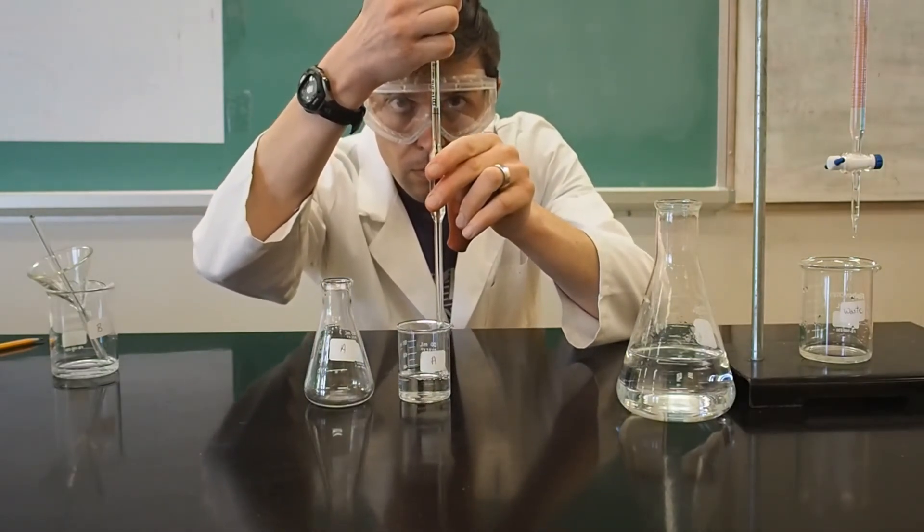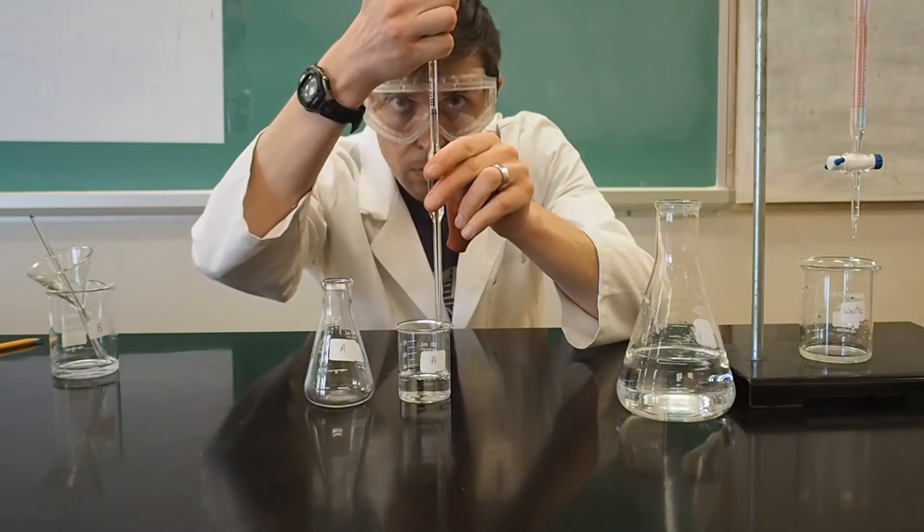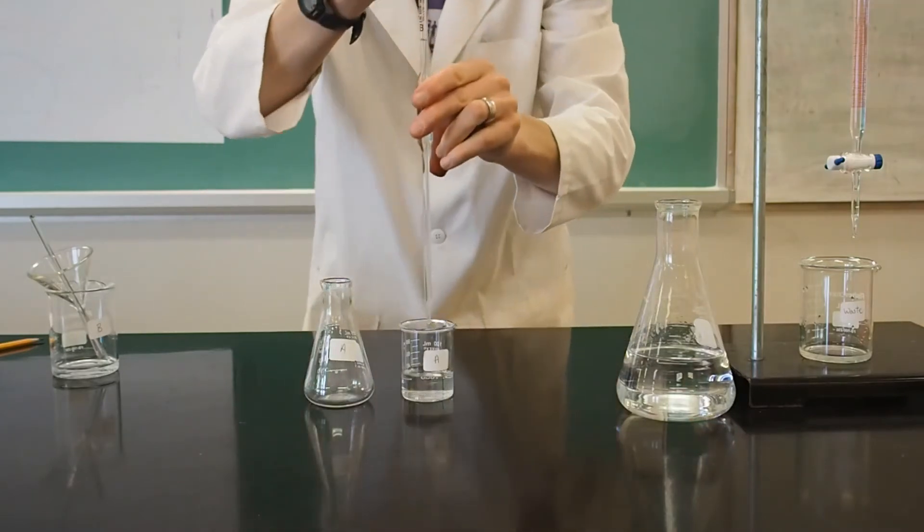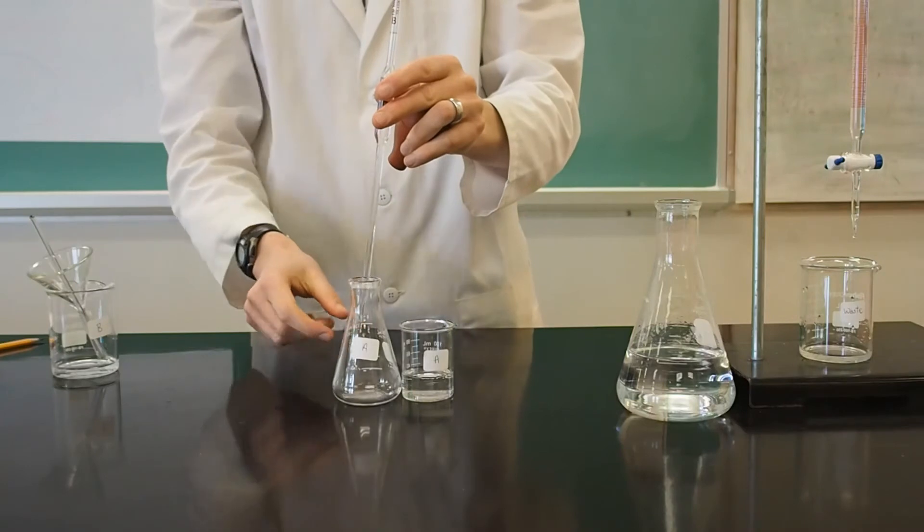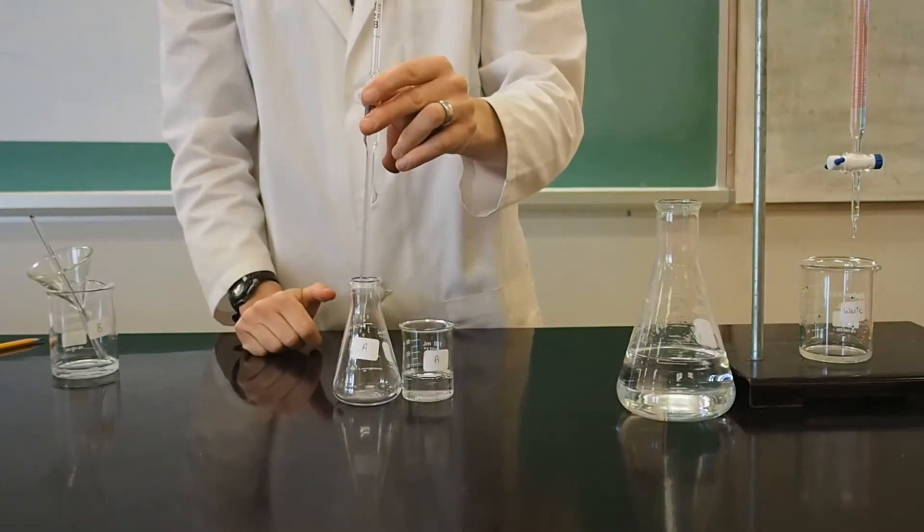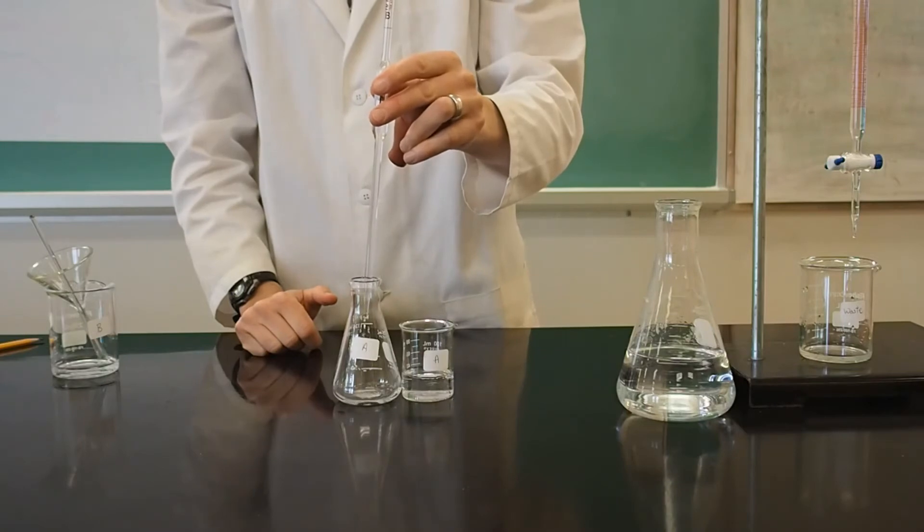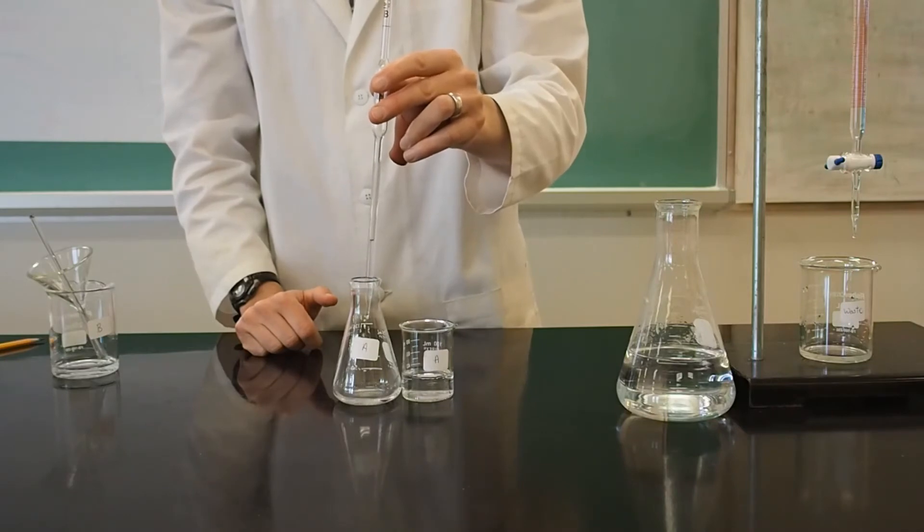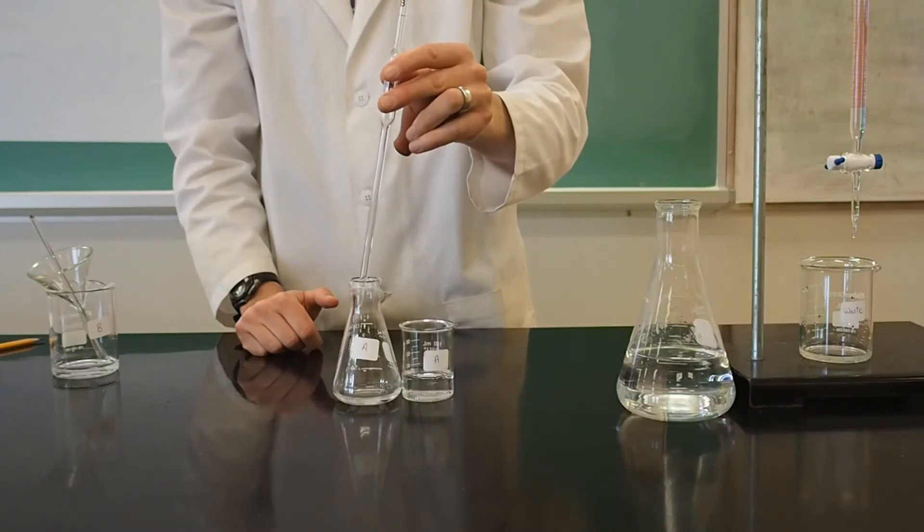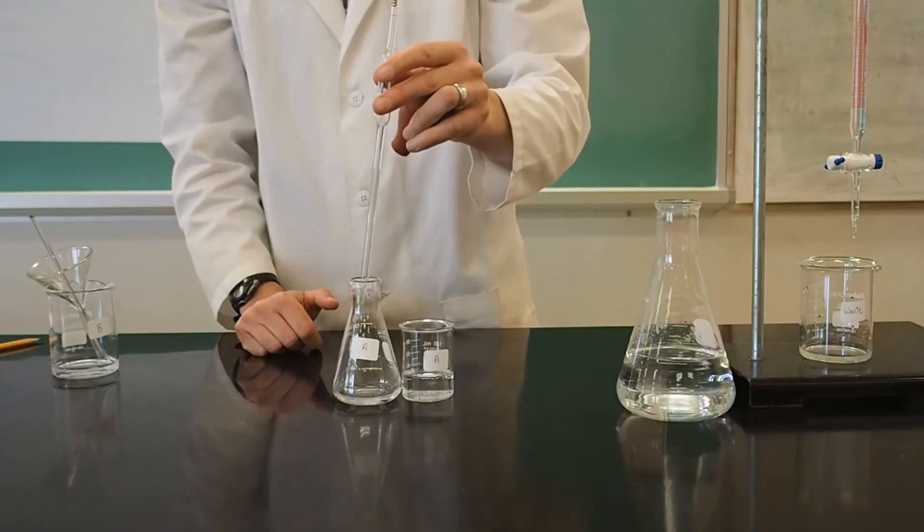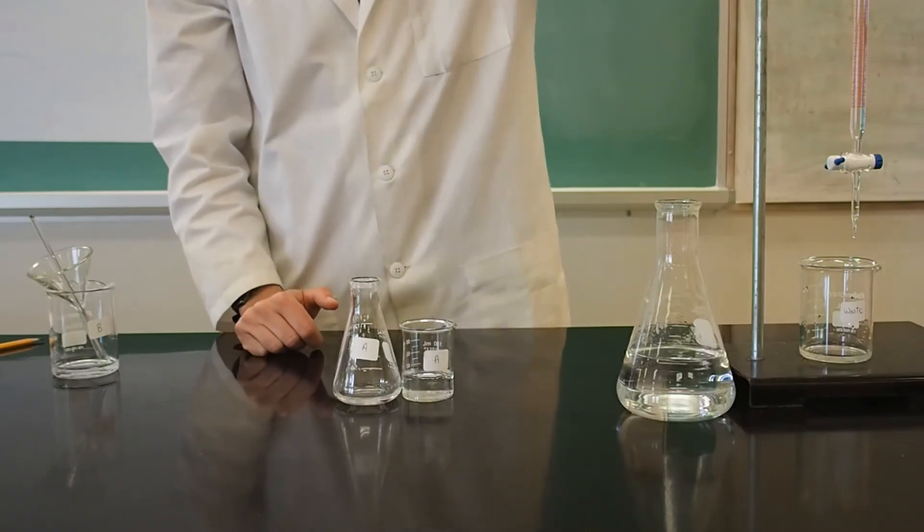Slowly release pressure on the bulb to draw the solution into the pipette. If the bulb fills with air before you have drawn up enough solution, remove it from the pipette and swiftly place your thumb over the end so not to lose the solution. Squeeze and hold the bulb and place it back on the pipette. Draw enough of the solution up so that you are above the fill line, being careful not to draw it up into the bulb.